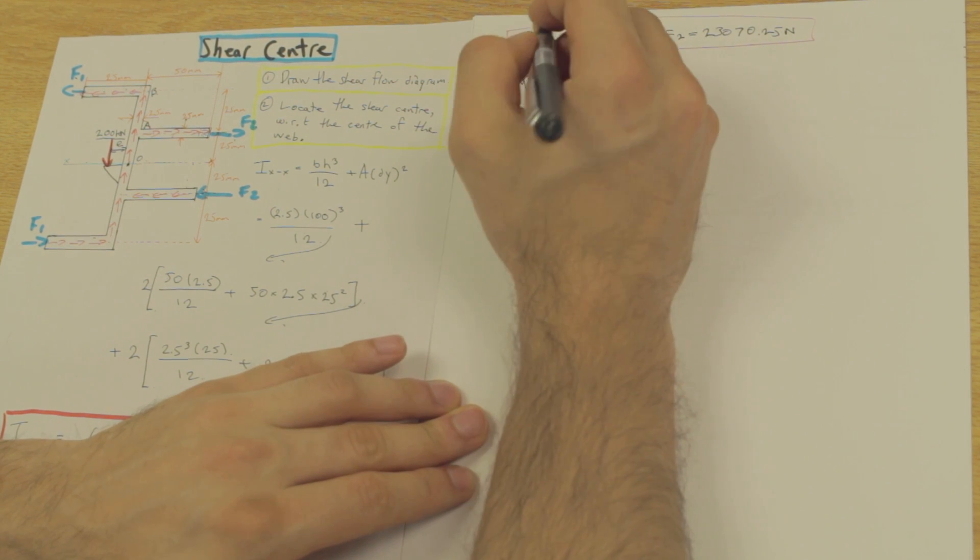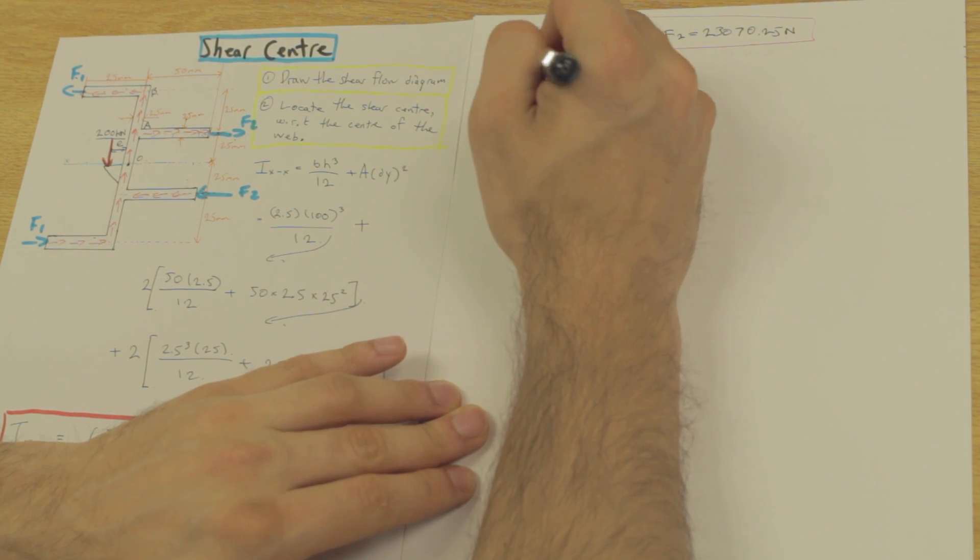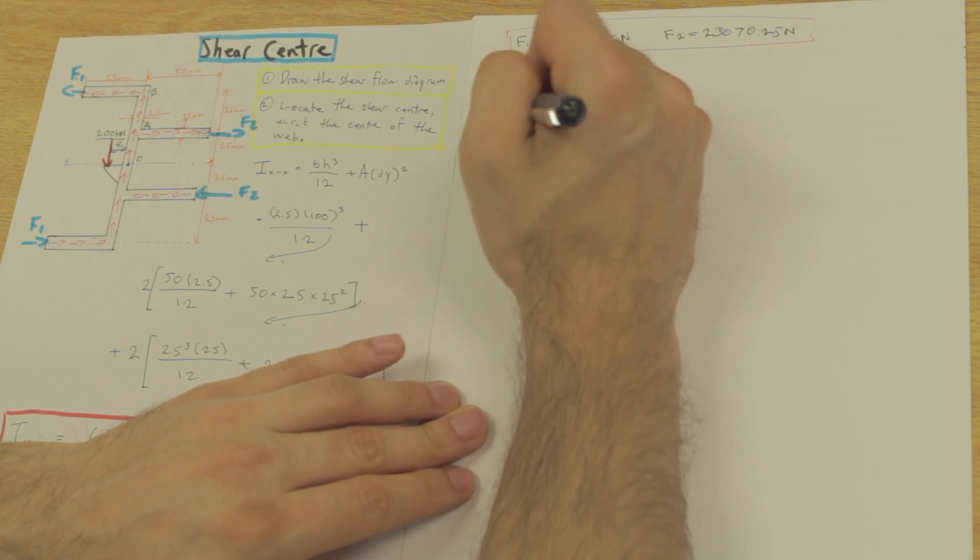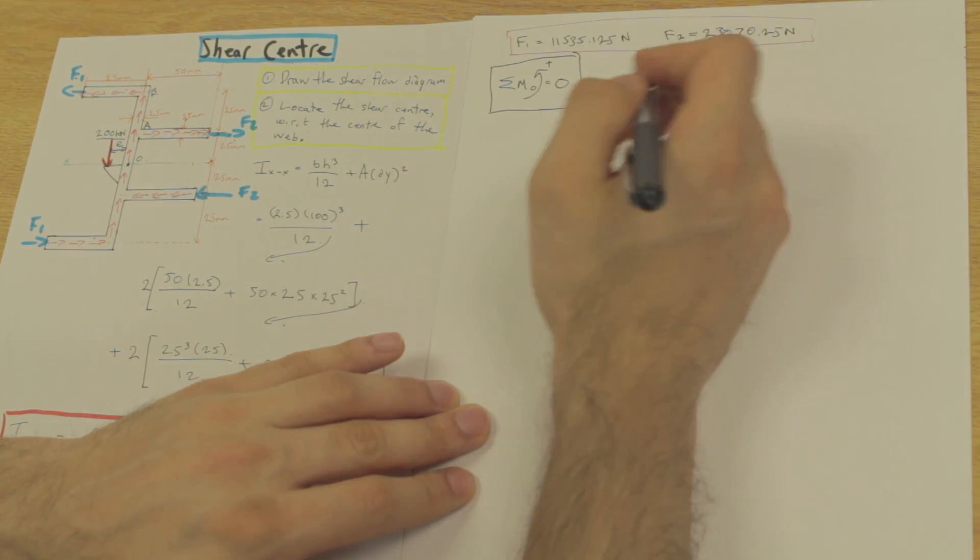The summation of moment, the moment about O, we're going to say that this is our positive direction, is equal to zero. And I just explained why that's the case. So keep that in mind.